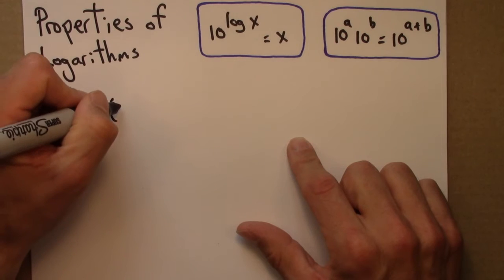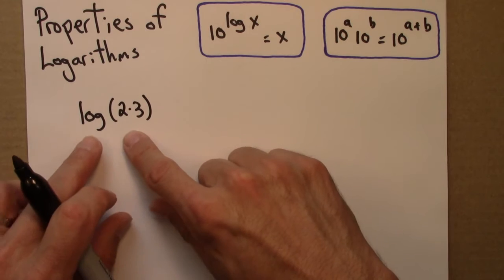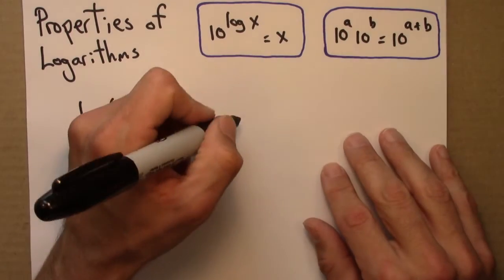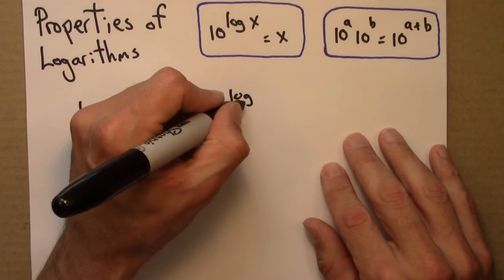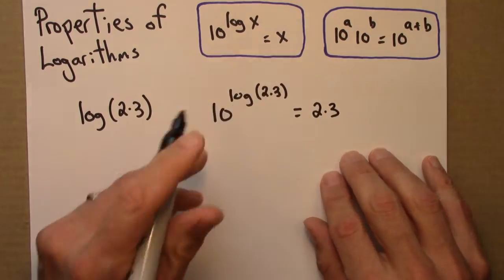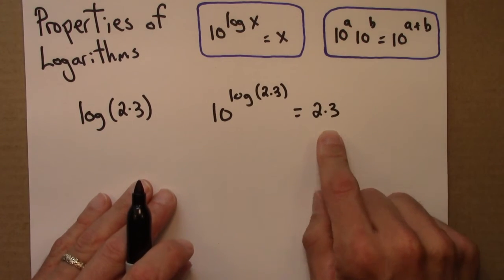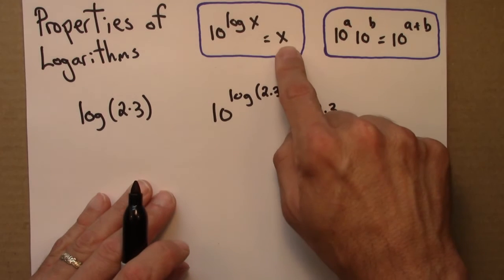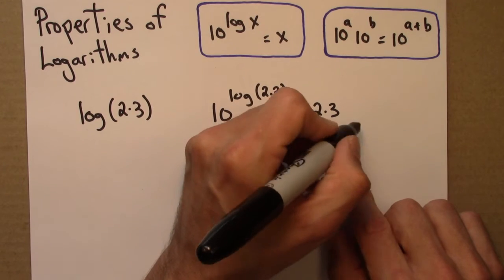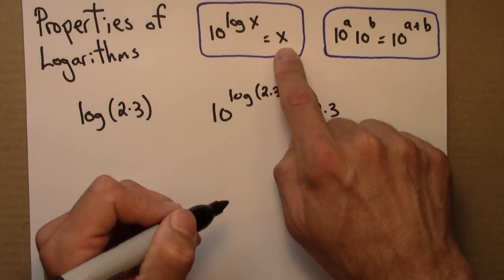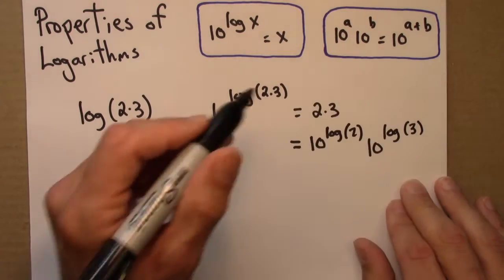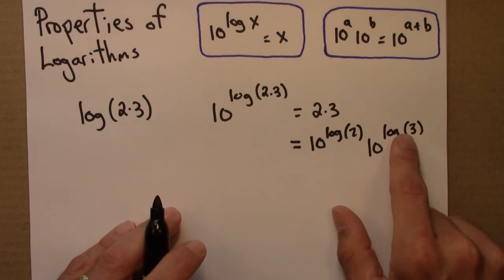Let's start thinking about something like log of 2 times 3. I'm going to leave that as 2 times 3. According to this relationship, I know that 10 to the log of 2 times 3 equals 2 times 3, replacing x with 2 times 3. Now, 2 equals 10 to the log 2, and 3 equals 10 to the log 3. So now I've got 10 to the something times 10 to the something else.